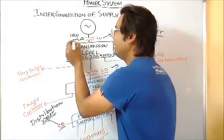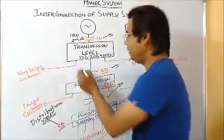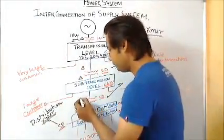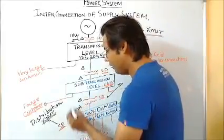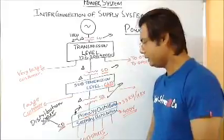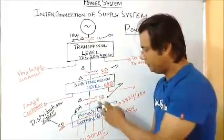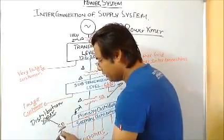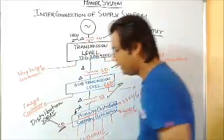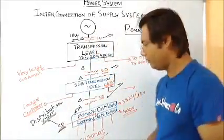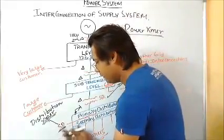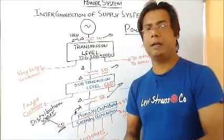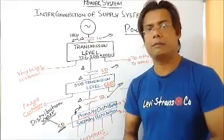Regarding winding configurations: the step-up transformer will be star to delta, where the star side is grounded. The transmission-level transformer will be delta to delta. The transformer going into distribution will be delta to star. The distribution transformer configuration depends on what is required, as we have already seen in the machines section regarding which side of the transformer should use which connection.